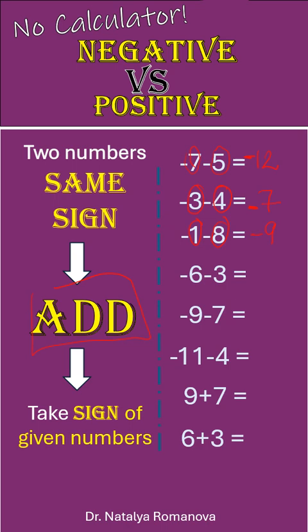Negative 6 minus 3. 6 plus 3, it is 9, and we keep the common sign.